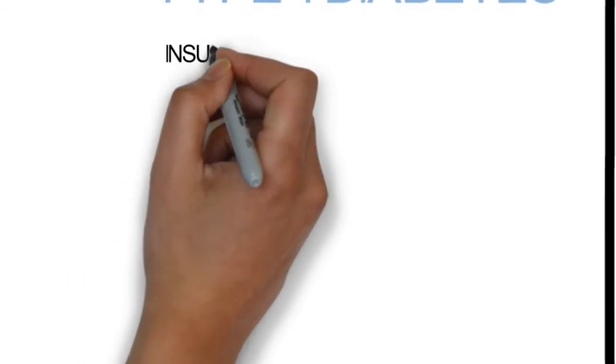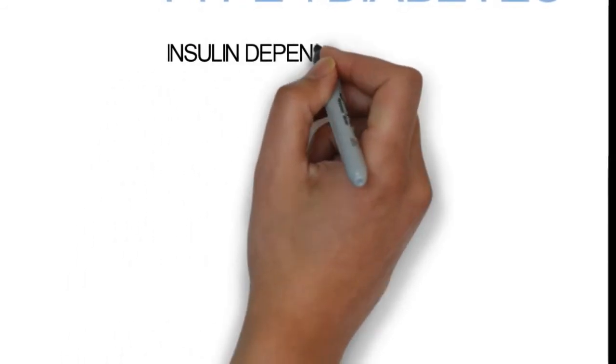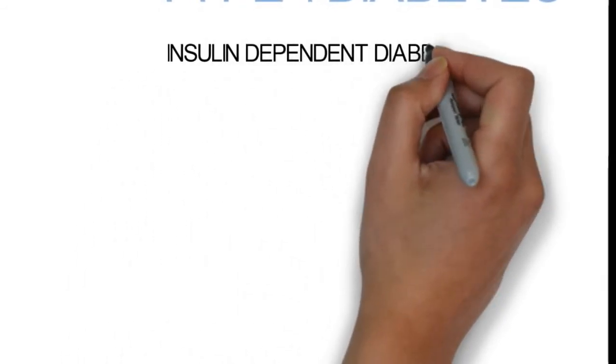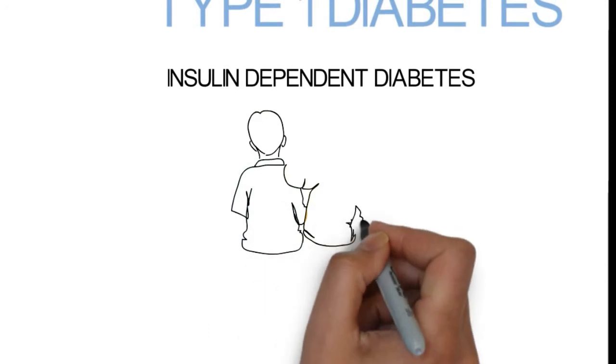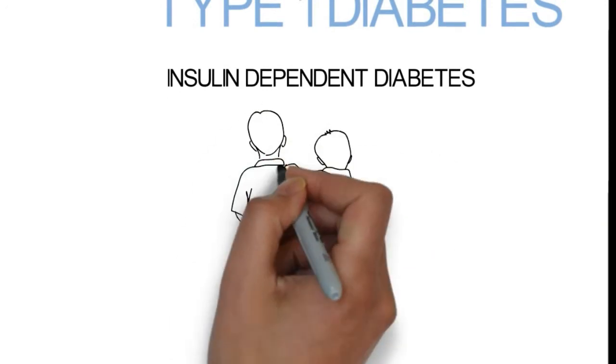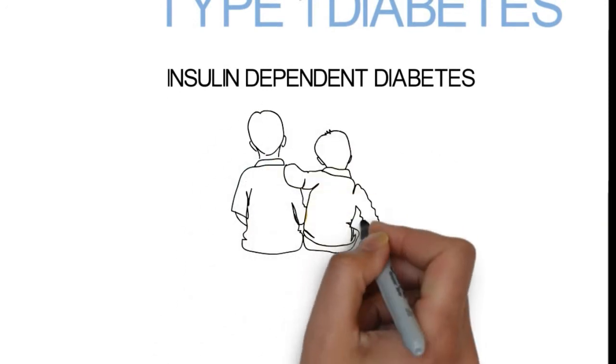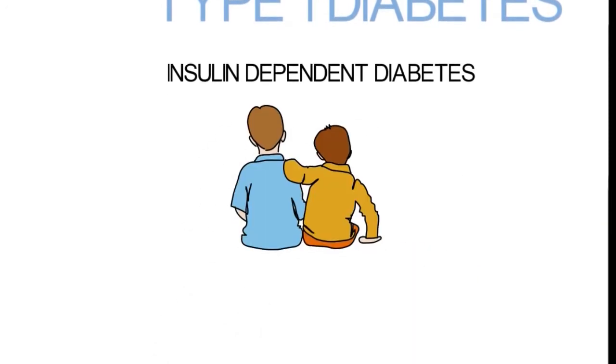Type 1 diabetes was previously known as insulin dependent diabetes mellitus. This type of diabetes usually occurs in children and adolescents.